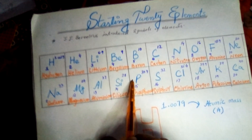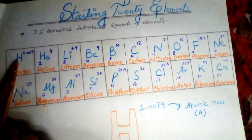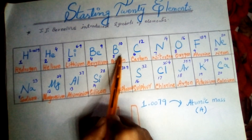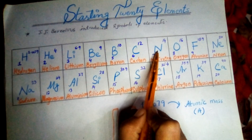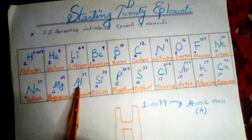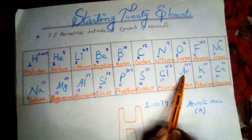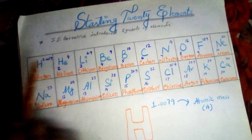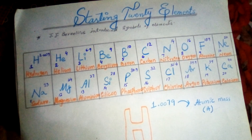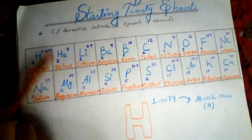Now here you are looking at the starting 20 elements in sequence: hydrogen, helium, lithium, beryllium, boron, carbon, nitrogen, oxygen, fluorine, neon, sodium, magnesium, aluminum, silicon, phosphorus, sulfur, chlorine, argon, potassium, and calcium. Here, along with the names of the starting 20 elements, the atomic numbers and atomic masses are also given. You can also remember the atomic numbers and masses.